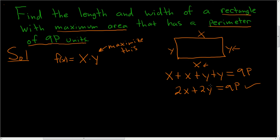So what we'll do is solve this equation for y. To solve this for y, we'll subtract 2x from both sides. So we get 2y equals 9p minus 2x. Divide everything by 2, and we end up with y equals 9p minus 2x all over 2.